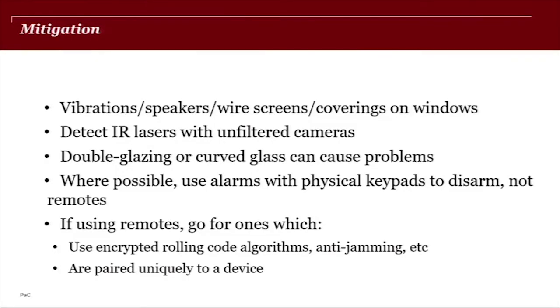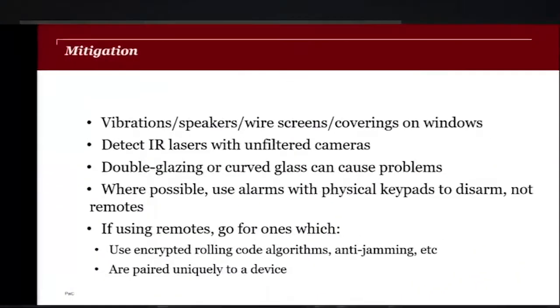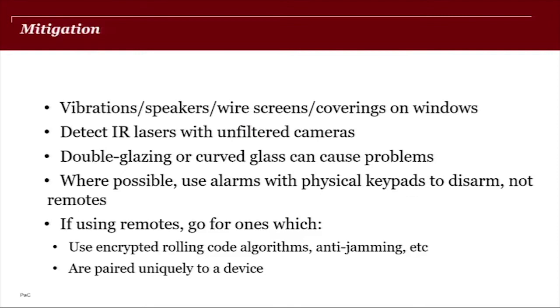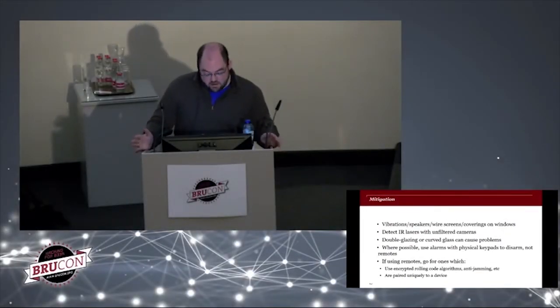So mitigations for these parts. So for laser microphones, there are various things you can do. You can deliberately induce vibrations on window surfaces. You can use things like wire screens and window coverings. You can detect infrared lasers, because it's just infrared light at the end of the day. Laser mics are also subject to a lot of environmental interference. So things like double glazing, curved glass, also things like wind, rain and snow and fog will really disrupt them. With alarms, ideally you want to be using physical keypads to arm and disarm systems rather than remotes, because remotes can be sniffed. If you are using remotes, you want to go for ones which use encrypted rolling code algorithms that have been tested, that have been subject to some kind of security assessment, that use anti-jamming as well. And then you also want to use remotes paired uniquely to a device as well. That always helps.